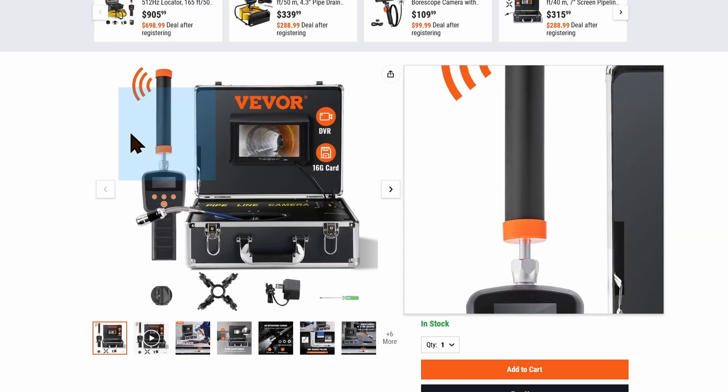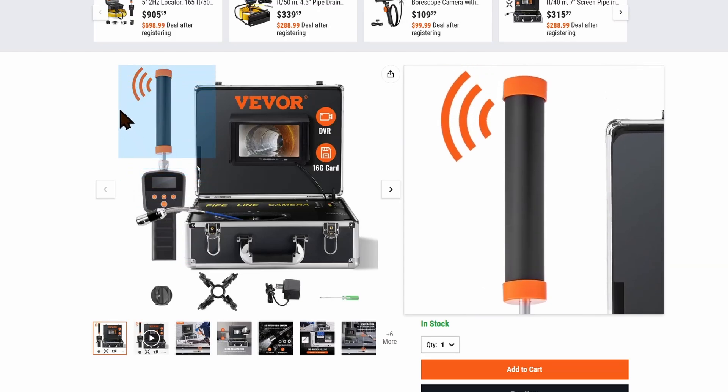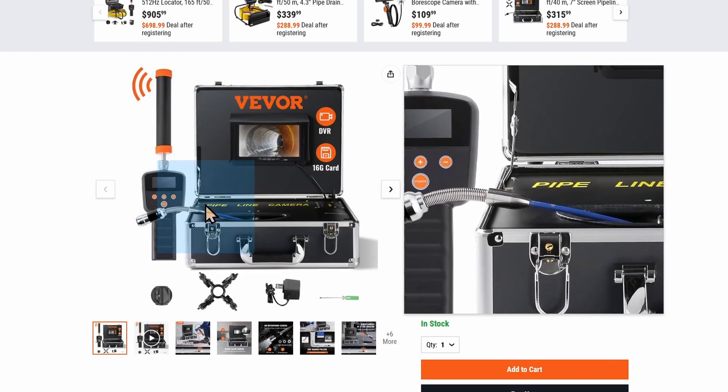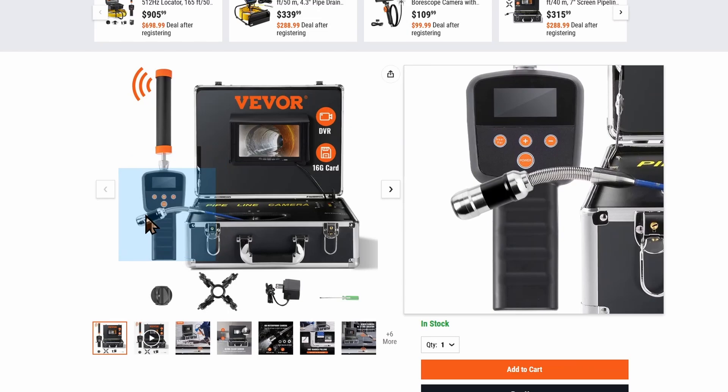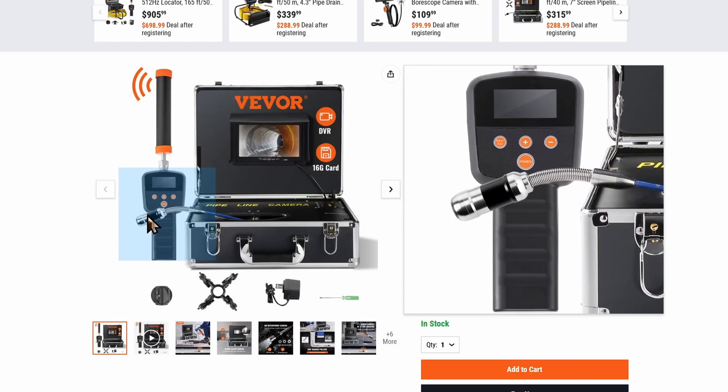This is an entire set that comes with a pipeline camera. It's got a display, all the wiring that you would stick down the drain is inside of this suitcase looking thing, and here's a locator that I actually have on hand.